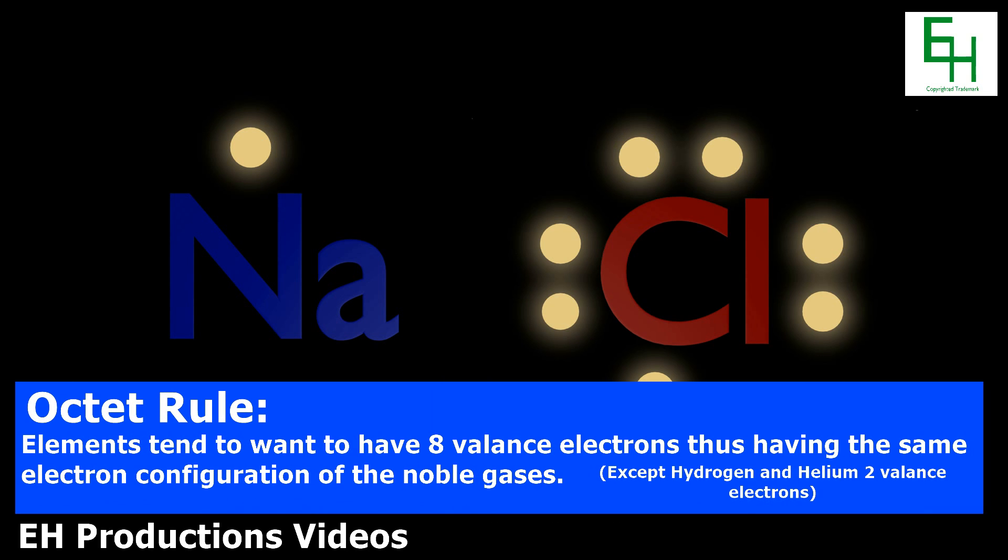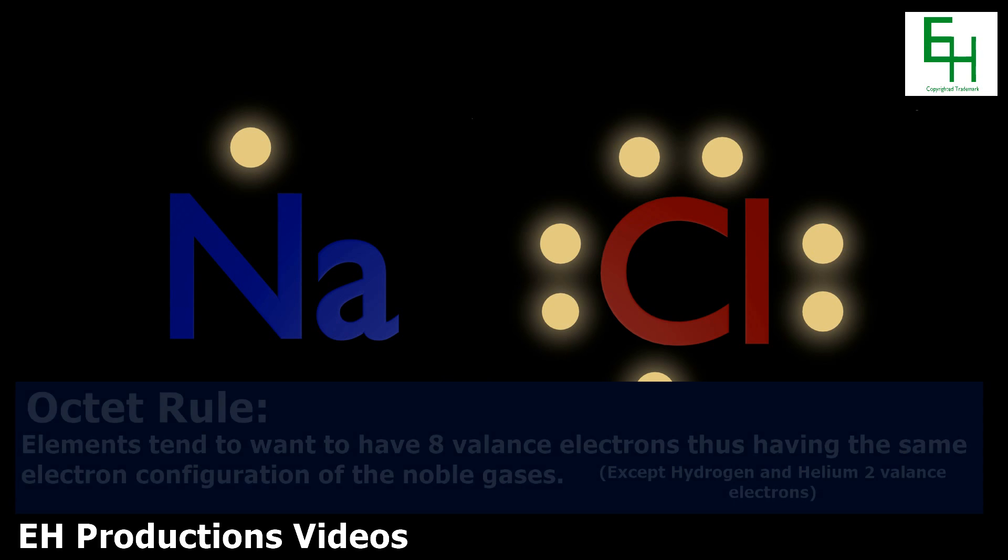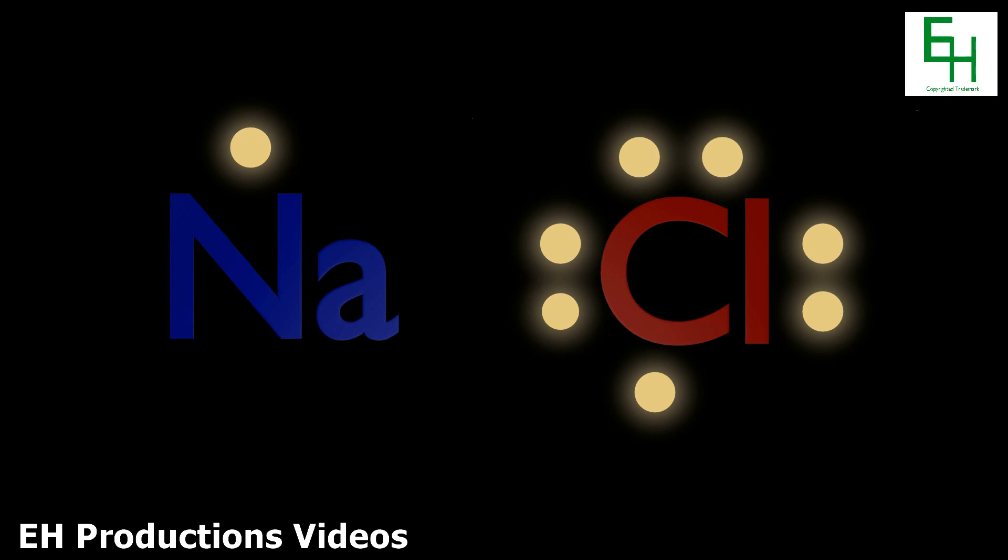In this case, because we are dealing with ionic bonds, atoms would either take electrons or give electrons. Since sodium has only 1 electron, it's much easier to just give 1 electron than to gain 7 electrons. On the other hand, chlorine has 7 electrons, and of course it's easier to just take 1 electron rather than to give 7 electrons away.